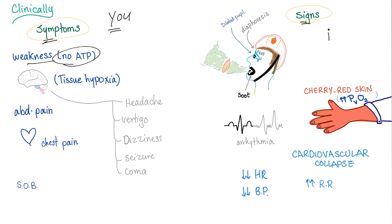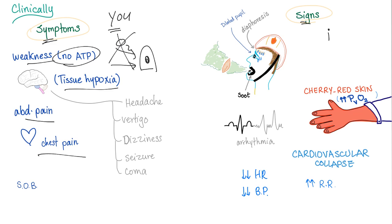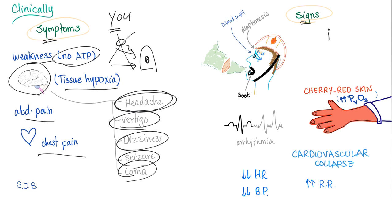Symptoms include: weakness (no ATP, electron transport chain is gone), tissue hypoxia (mitochondria not utilizing oxygen), abdominal pain, chest pain, and neurological problems such as headache, vertigo, dizziness, seizure, and coma. All of these are the same as in carbon monoxide poisoning.